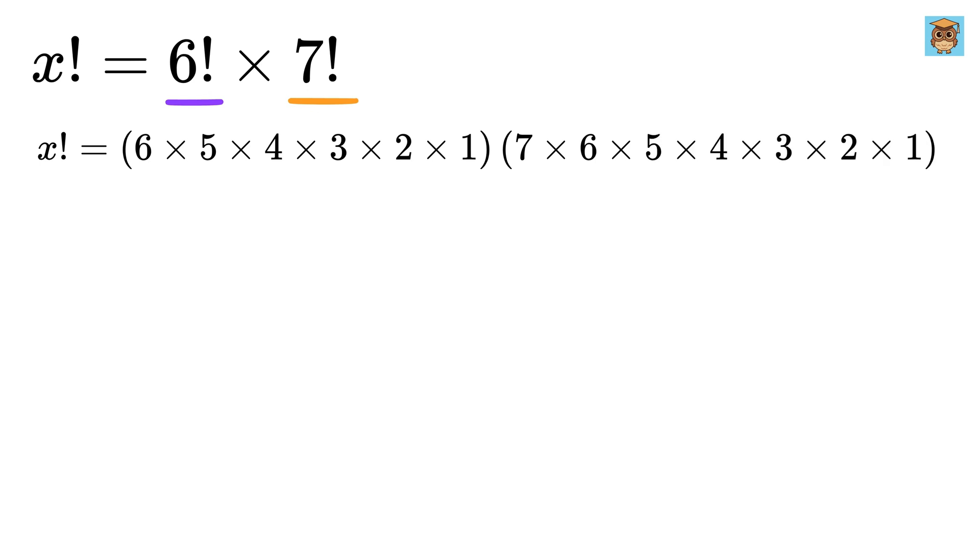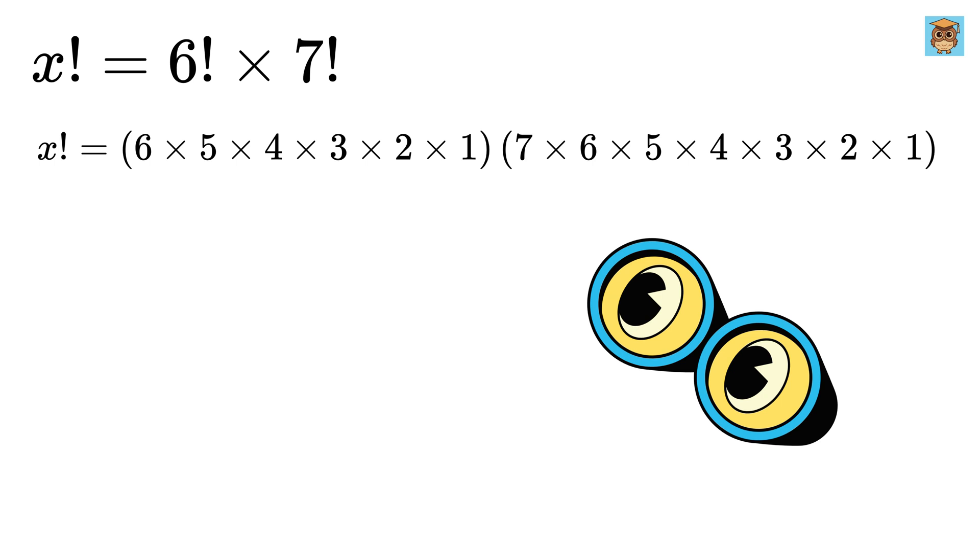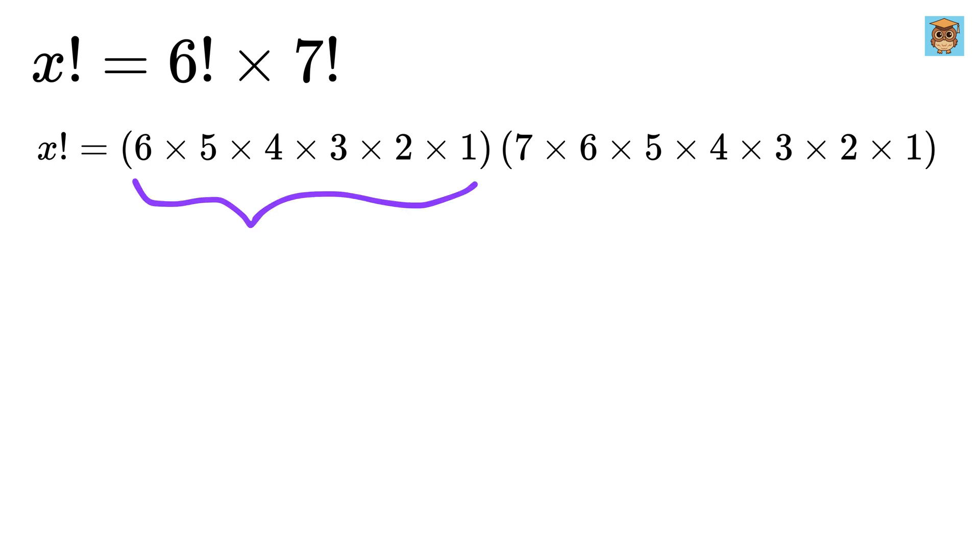Now look here closely. We will keep this part just the way it is but rewrite them in reverse order like 1 times 2 times 3 and so on till 6. And after that cancel all of them in this part, leave the 7 as it is for now and cancel it from here.